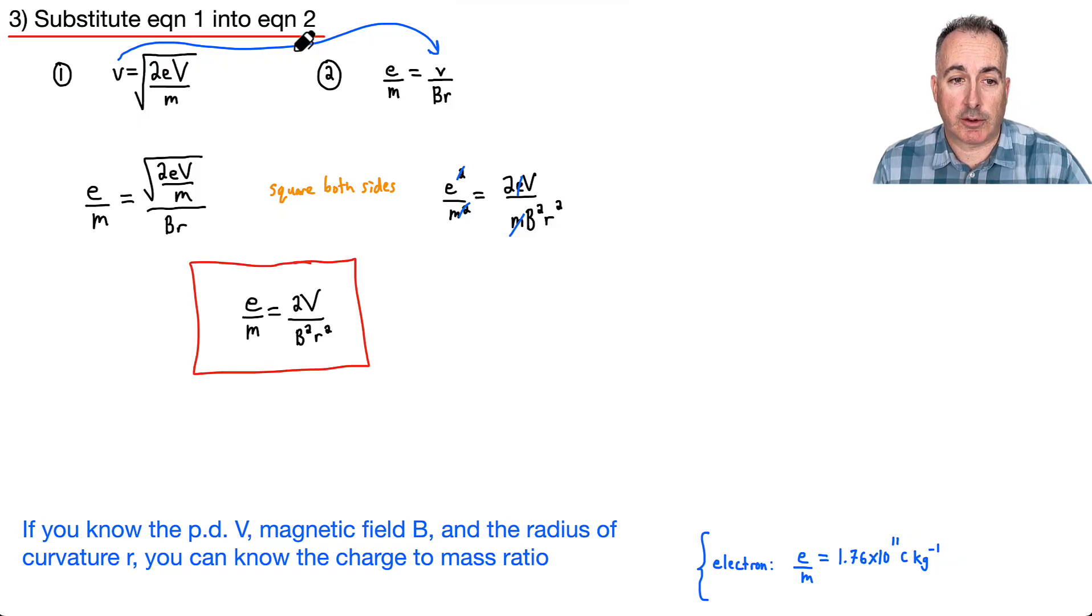This tells me the charge-to-mass ratio, as long as you know the potential difference, the magnetic field strength, and the radius of curvature. You remember this thing started curving. As long as you know those things, you can figure out the charge-to-mass ratio of the electron. For the electron, e over m is 1.76 times 10 to the 11, and that's coulombs per kilogram.